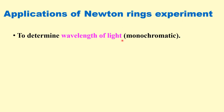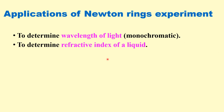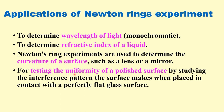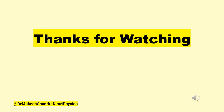The Newton's ring experiment is used to determine the refractive index of a liquid, and it can also determine the radius of curvature of a lens. It is also used for testing different optical surfaces, because a surface makes an interference pattern when placed in contact with a flat glass plate, so we can test whether the surface is flat or not using interference.